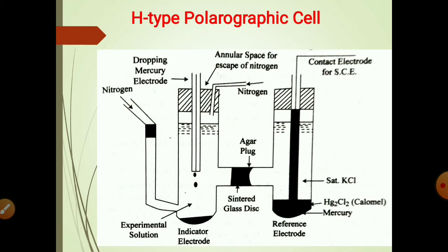The H-type cell is connected in the polarography setup in the same way as the DME mercury anode cell. The potential applied to the cell is varied and corresponding currents are measured or recorded for the different potentials. The potentials of the DME can be calculated as a difference between the EMF of the cell and the potential of the reference electrode, that is the saturated calomel electrode, which is known. So, this is all about the H-type polarographic cell.